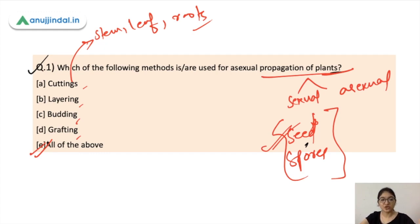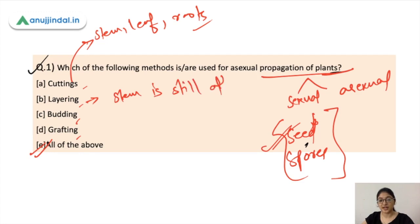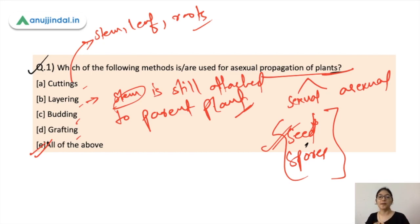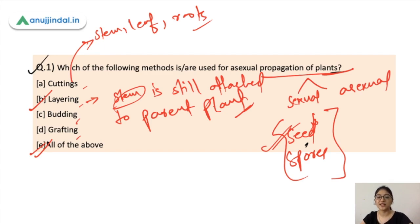In layering, the stem is not cut — it remains attached to the parent plant. You make some modifications to the stem, or introduce a rooting medium, so that roots develop on that stem. After roots develop, you then cut it and transplant it as a new plant. So in layering, the stem is still attached to the parent plant, the rooting medium is introduced, and new roots are developed.